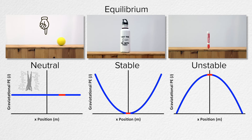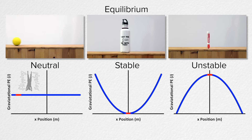This ball is in neutral equilibrium because the gravitational potential energy of the ball remains constant regardless of its position. So the graph of the gravitational potential energy of the ball with respect to position is a horizontal line because the gravitational potential energy is constant.